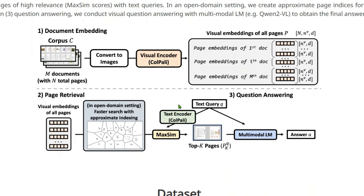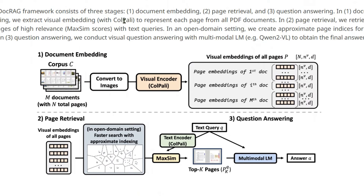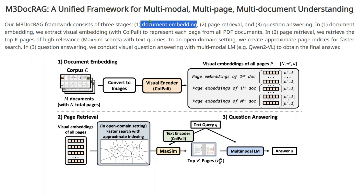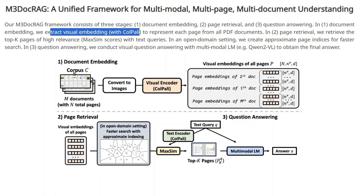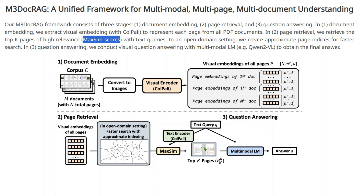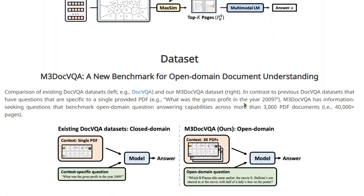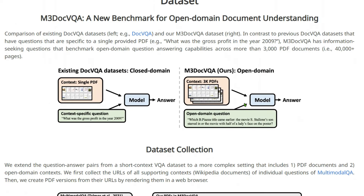This is the new methodology — a unified three-step framework. Step one is document embeddings: documents are converted to images and the visual encoder ColPali converts them to page embeddings. Step two is page retrieval: top-K pages of high relevance are selected using a max similarity score against the query, based on text encodings from ColPali. Step three: those pages are passed through the multi-modal LLM, which generates the answer. It's a simple process, but very effective.